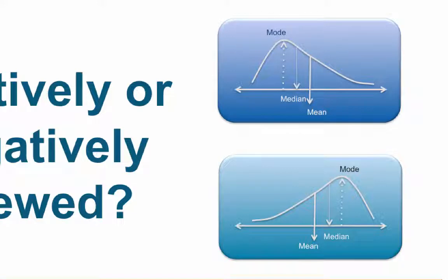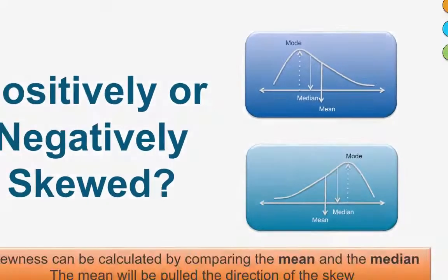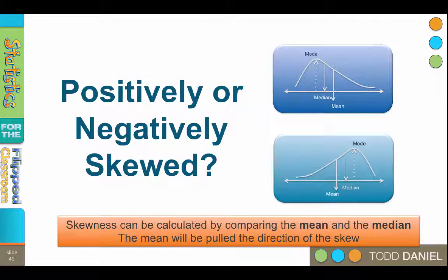Mathematically, we can calculate a measure of skewness by comparing the mean and the median. This will give us a value that we can use to quantify the skewness of our curve. But there are other things that can go wrong with our normal curve.